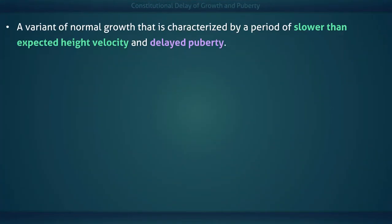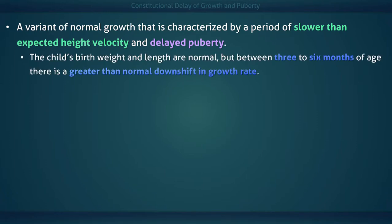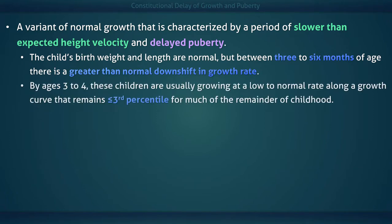Constitutional delay of growth and puberty is a variant of normal growth characterized by a period of slower-than-expected height velocity and delayed puberty. The child's birth weight and length are normal, but between three and six months of age there is a greater than normal downshifting growth rate. By three to four years of age, these children are usually growing at a low to normal rate.